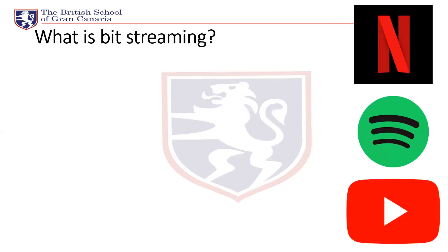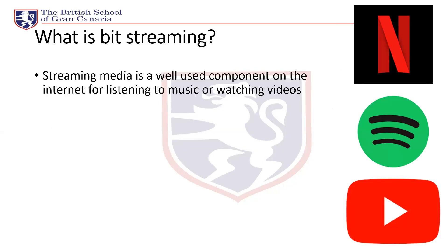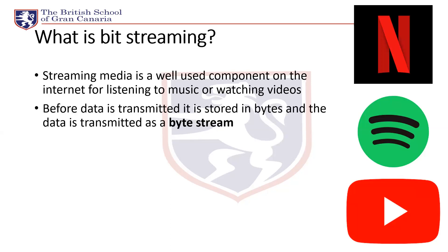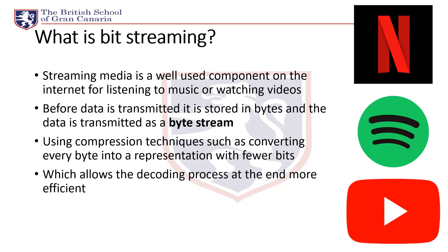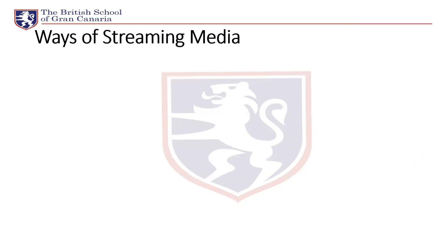Bit streaming is when you use a component on the internet for listening to music or watching video — services like Netflix, Spotify, and YouTube. This is done through software provided by those platforms. Before the data is transmitted, it's stored in bytes and then transmitted as a byte stream. Using compression techniques such as converting each byte to represent fewer bits, the media can be streamed efficiently through the internet to your device, making the decoding process at the end more efficient.